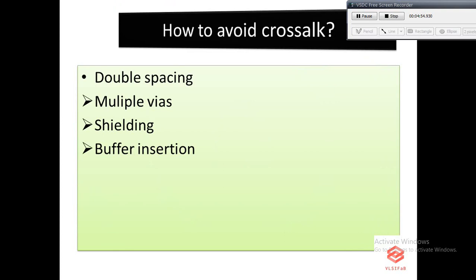Double spacing: double spacing increases the spacing between the aggressor net and the victim net so that the cross coupling capacitance decreases as spacing increases, thereby reducing the effect of crosstalk.